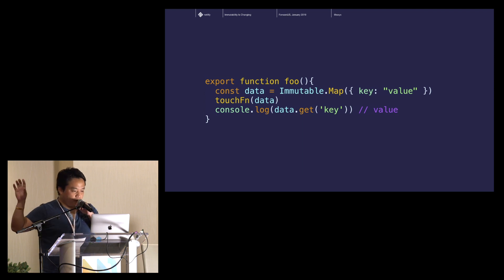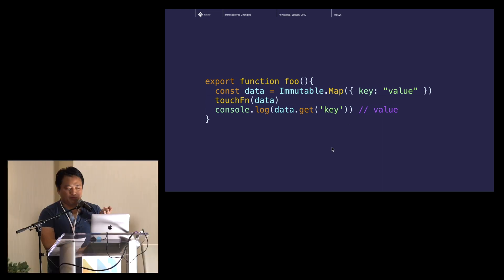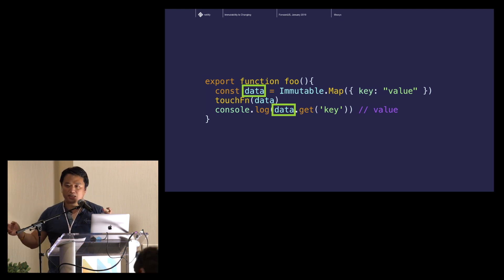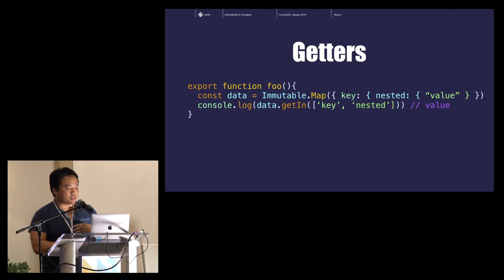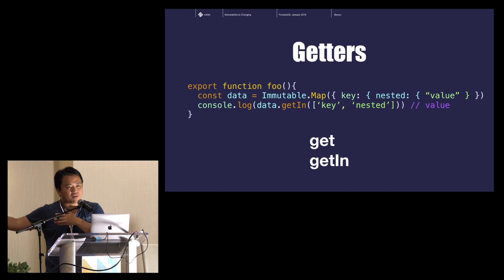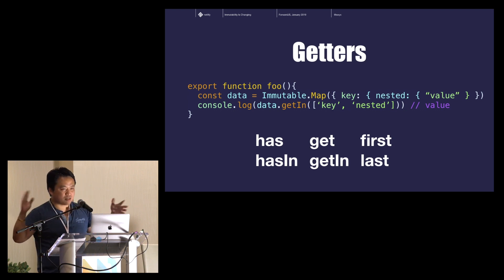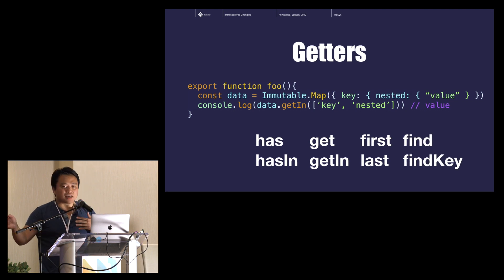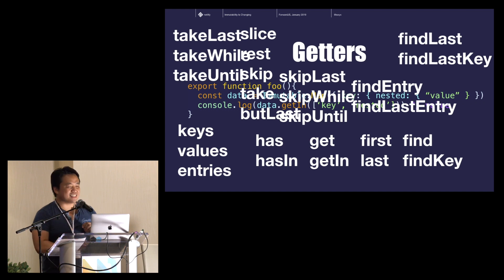Here we have the same function introduced earlier, but I've wrapped my object in a function called Immutable.Map, which gives me back a data structure called a Map. To access data, I just call .get(key), and I have a guarantee that these things are immutable — they will never change. So I don't have to keep my entire codebase in working memory; I just look at what's in front of me. For nested objects, there's an API called getIn — you pass in an array of keys and it indexes into each one. For checking existence of a key, there's has and hasIn. There's also find and findKey — and keys, values, and entries are all slightly different things. These are helper utility methods for getting things out of the data structure.